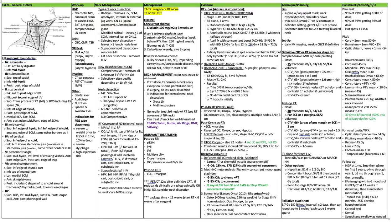Looking at definitive chemoradiation, the Cleveland Clinic Adelstein trial had three arms: radiation versus chemoradiation versus split-course chemoradiation. Three-year overall survival was 23% for radiation alone, 37% for chemoradiation, and 27% for split course. A meta-analysis showed concurrent mono-agent platinum improved five-year overall survival by 8%, and 5% overall survival benefit with chemo plus RT.